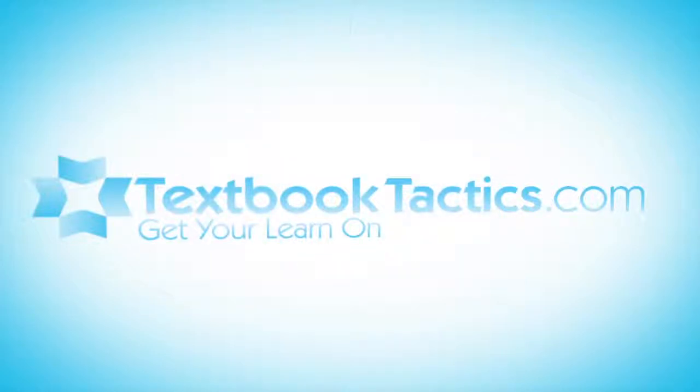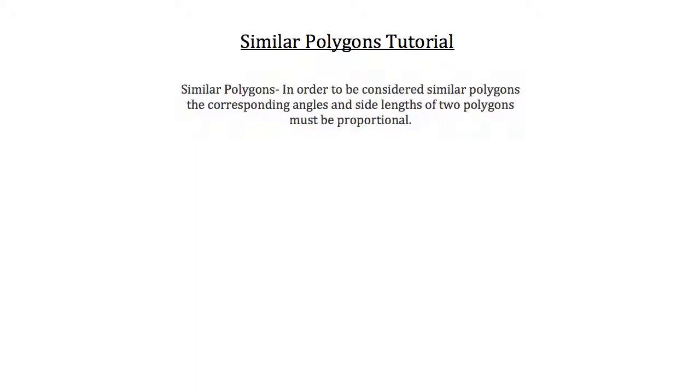This is the Similar Polygons tutorial. In order to be considered similar polygons, the corresponding angles and side lengths of two polygons must be proportional.